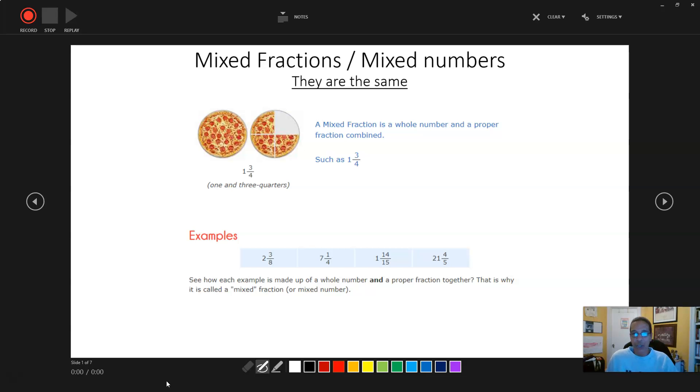Anytime you see a 4 in the denominator, sometimes you might hear quarter. 4 quarters are in a dollar, so they'll say quarter. So 7 and 1 quarter or 7 and 1 fourths. Then you have 1 and 14 fifteenths, 21 and 4 fifths. They're all made up of whole numbers and proper fractions.